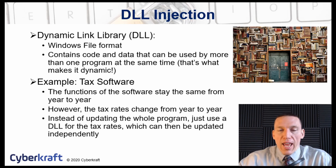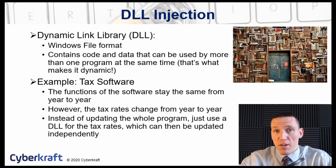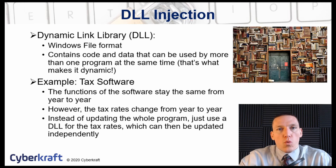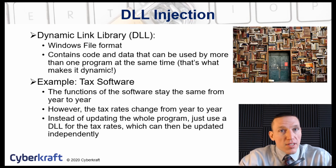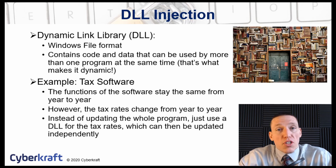Attackers can write their own DLLs or alter an existing one and pass it off as legitimate. If they do so, they're able to create whatever vulnerabilities they want in the software, because the software has accepted the attacker's DLL as a legitimate one. The attacker can then create security backdoors or put malicious code in that DLL.